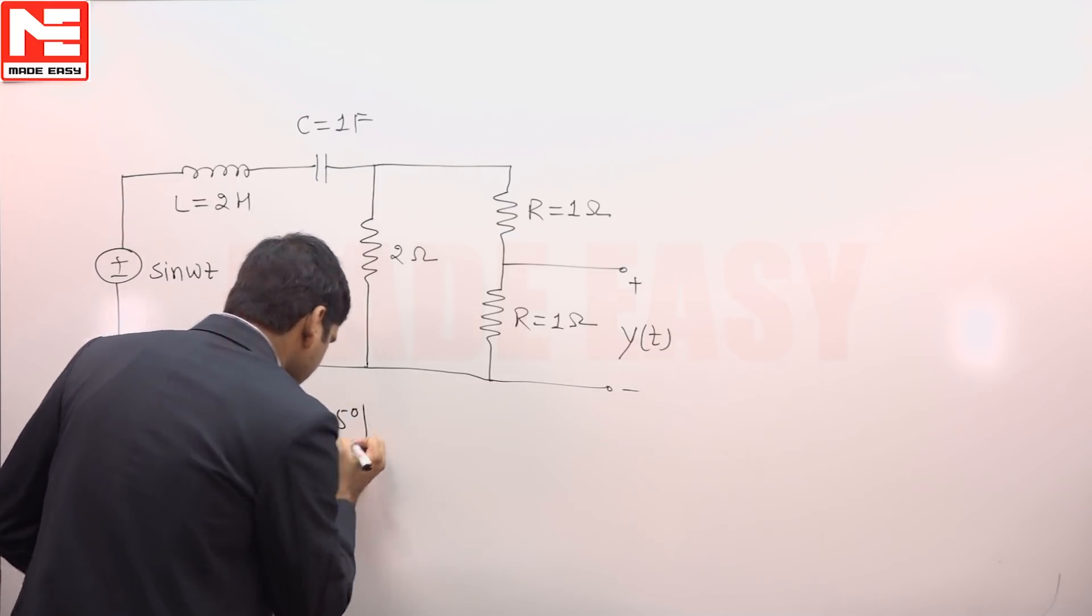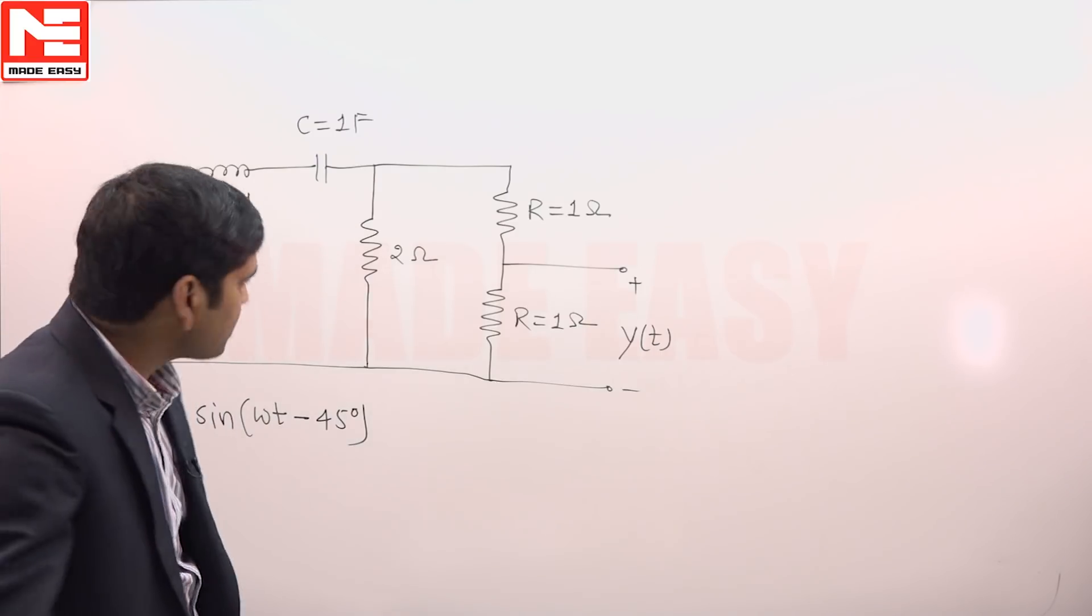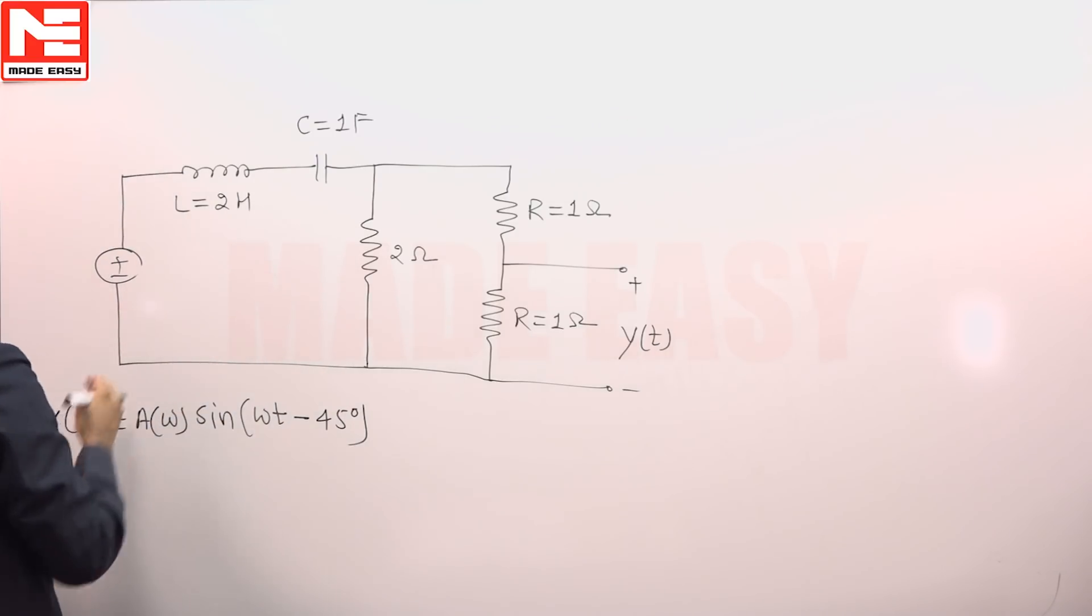It is minus 45 degrees, then the frequency omega we need to calculate. Let us first convert the circuit in frequency domain.